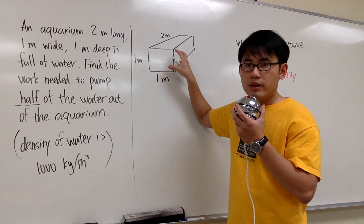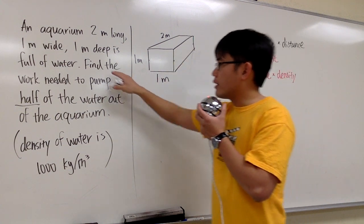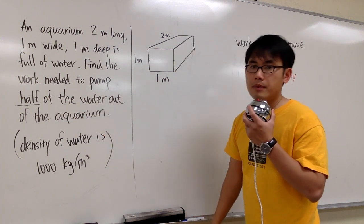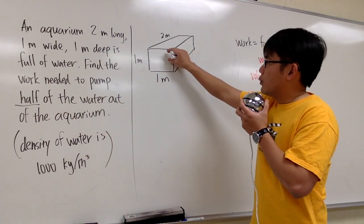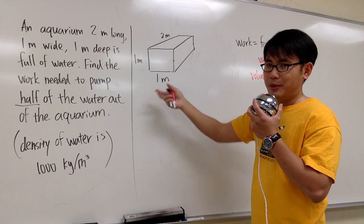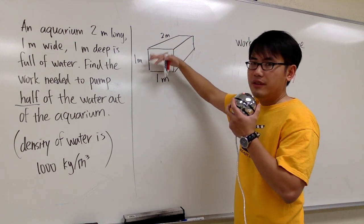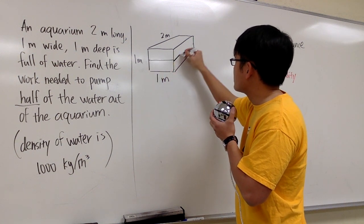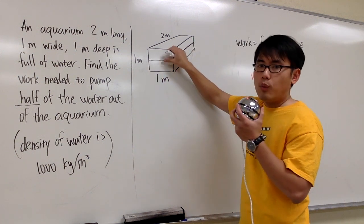This is full of water first. We would like to find out the work that we need in order to pump out half of the water from this aquarium. We cannot pump out the bottom half without pumping out the first half. So this question is asking us, if this is full of water, what's the work that we need in order to pump out the top half of the water.